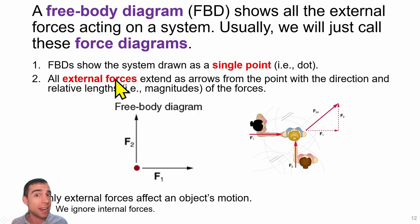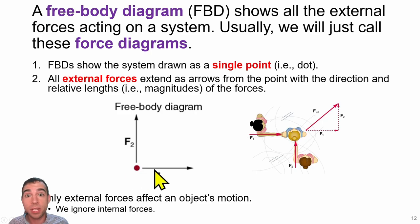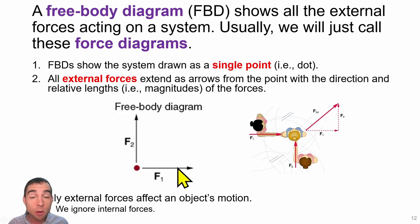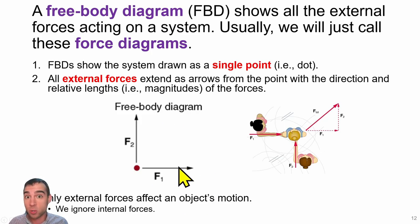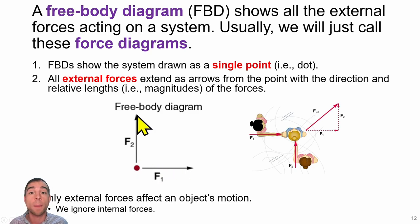Any external forces acting on that system we draw as arrows in the direction those forces point. The size of these arrows should be scaled relative to the magnitude of the force, so a bigger force has a bigger arrow and a smaller force has a smaller arrow, and the direction must also be accurate.